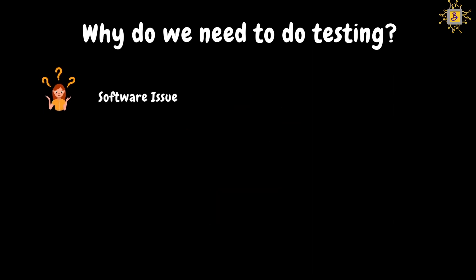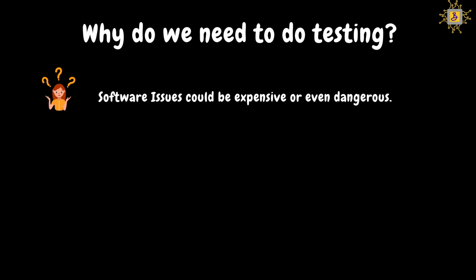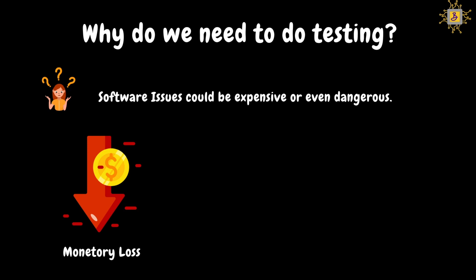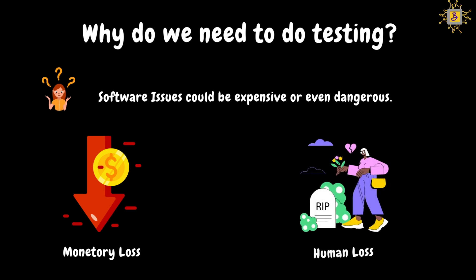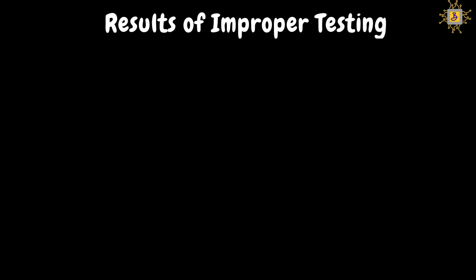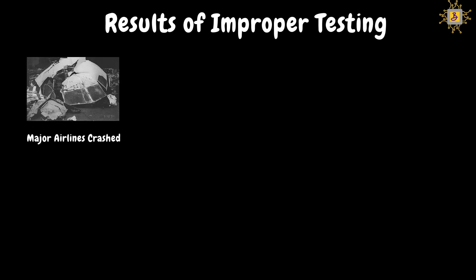Now let's look at why testing is important. Software issues can be very expensive and sometimes even dangerous. For example, on April 26, 1994, a major airline crash occurred involving 271 passengers and crew. This was due to a software issue. If testing had been done properly, this incident might have been avoided.